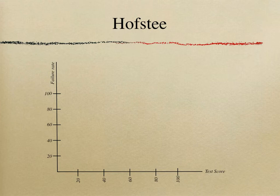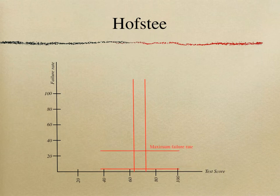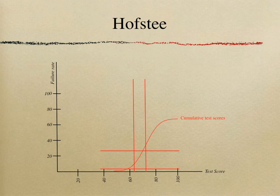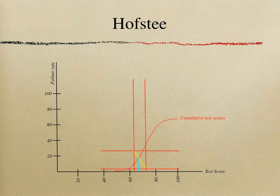You then construct a graph with test score up to 100% on the x-axis and failure rate on the y-axis. You draw four lines corresponding to the four questions: minimum pass score, maximum pass score, minimum failure rate, and maximum failure rate as agreed by the panel. You also plot the cumulative test score curve for that particular exam. The intersection of those four lines crosses the test score curve at a given point, and whatever test score that corresponds to on the x-axis becomes your pass mark.